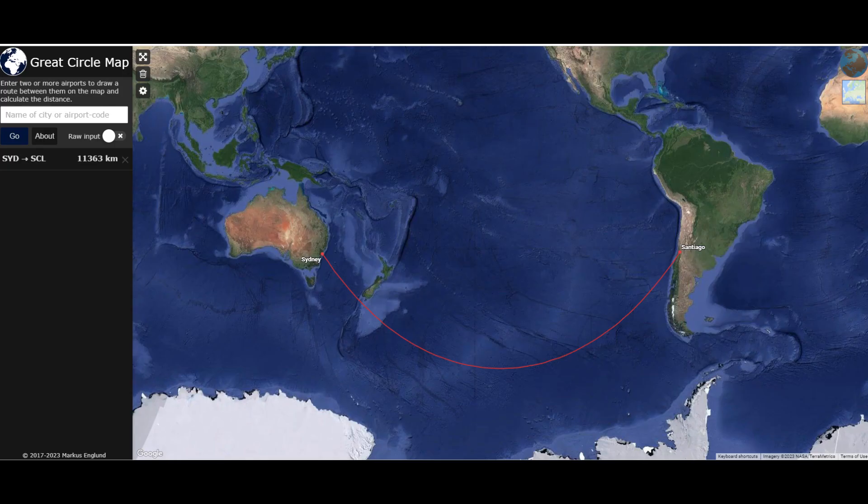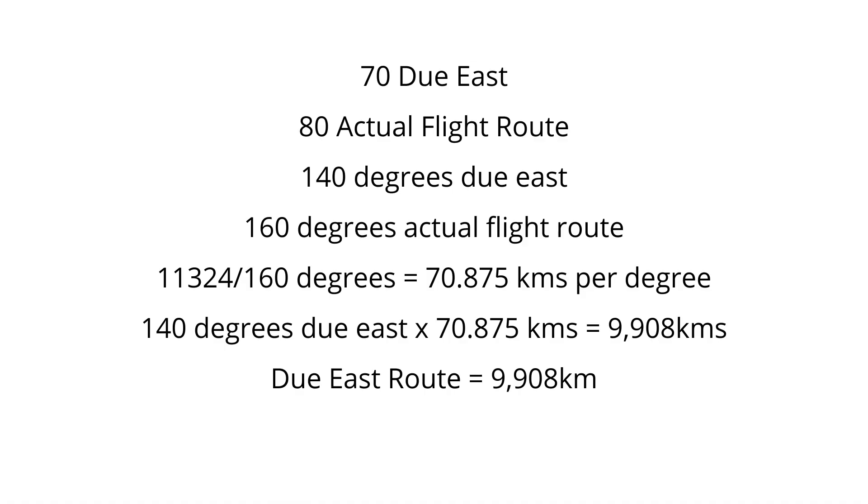Remember, they haven't just gone due east, far from it. They've dipped right down, an extra 20 degrees. So if you multiply the 140 degrees due east by this new 70.875 kilometres average, that'll give you 9,908 kilometres. So the due east route on a flat earth would be 9,908 kilometres.